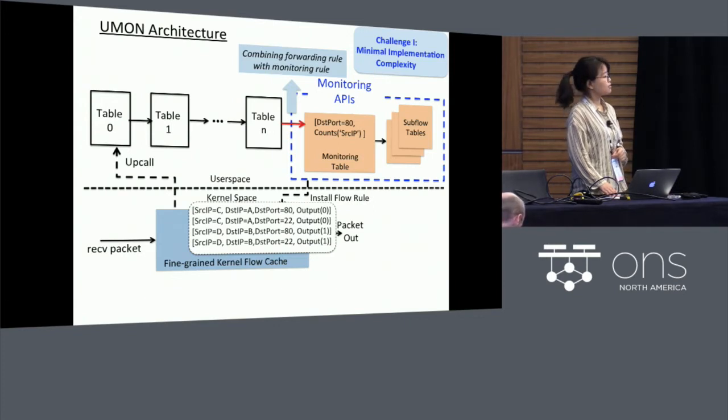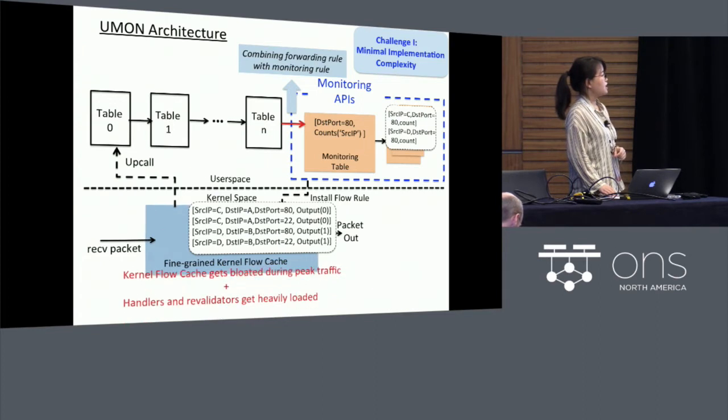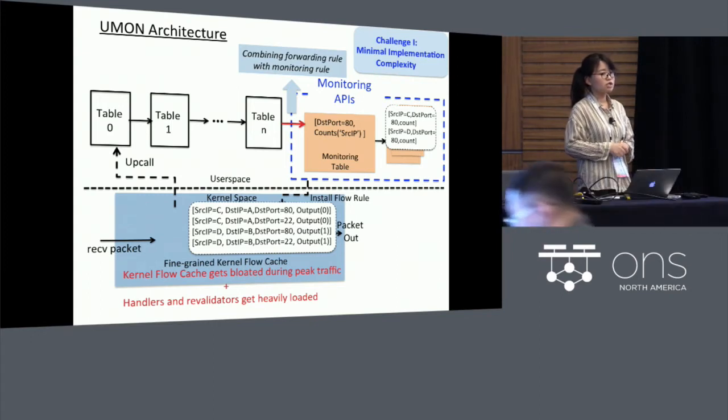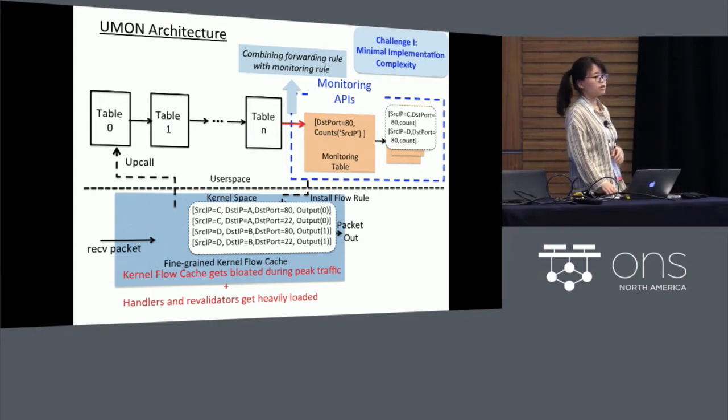Also UMON minimizes implementation complexity by introducing no extra component in the kernel space. There are several potential problems. First, the kernel flow cache can get bloated during the peak traffic. Besides, the handler and revalidator threads can get heavily loaded due to the frequent upcalls from the kernel into the user space, as well as the flow stats aggregation performed by the revalidator threads in the user space.